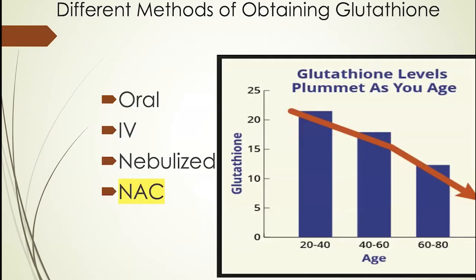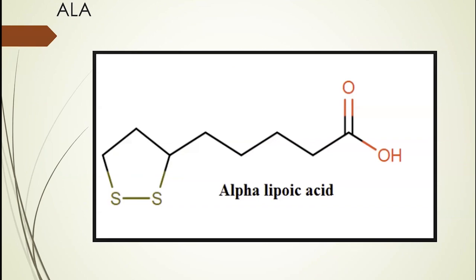Glutathione has three amino acids stuck together. One of my favorite oral sources is NAC, although I'll be upfront — the government has made it harder to obtain; you can no longer easily get NAC on Amazon, which the body converts into glutathione. You can also take glutathione orally, intravenously, or inhale it. As you get older, your glutathione levels decline, which is a problem because glutathione is the master detoxifier. Alpha-lipoic acid has a charged side and a fatty side and also increases glutathione levels.